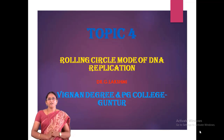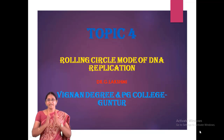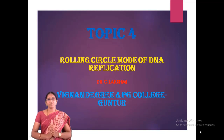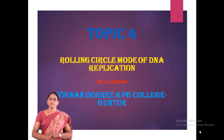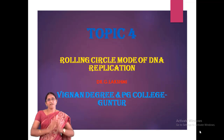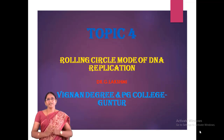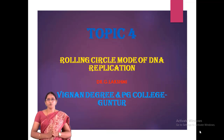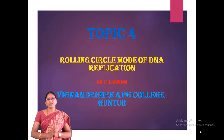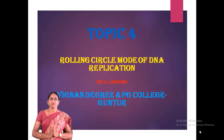During the rolling circle mode of replication, the 3' hydroxyl group is readily available to DNA polymerase III. So without having any primer, it can replicate or synthesize a new copy of the DNA on the circular template DNA molecule.